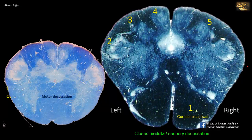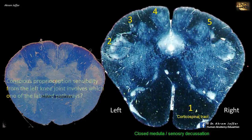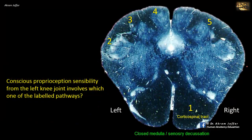It's called motor decussation because these corticospinal fibers carry motor information from frontal and other cortices. These motor fibers are important for the execution of learned, skilled movements. So the fibers in one are motor and not involved with sensory function.